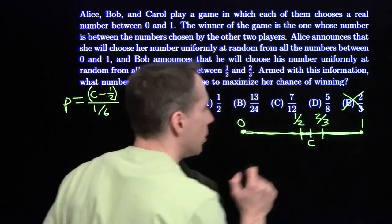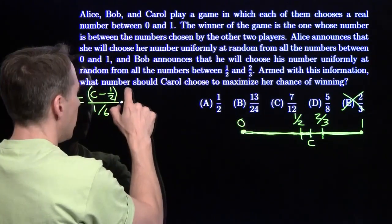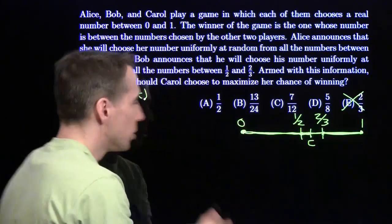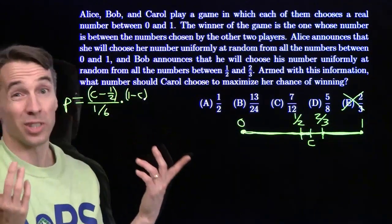Alice has to choose over here on the right. She has an interval of length (1 - C) to choose from out of the whole 1. We could put it divided by 1 there, but what's the point of that?